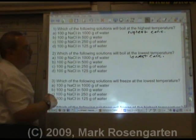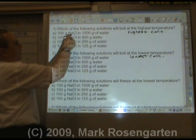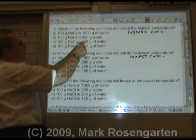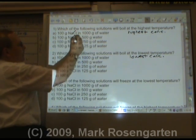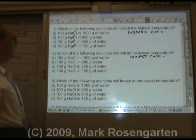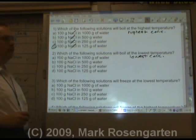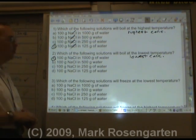Well, they are all exactly the same substance so we can eliminate that. Concentration is the amount of salt you have in how much water you are dissolving it in. 100 divided by 1000, 100 divided by 500, 100 divided by 250, 100 divided by 125. That's going to be your most concentrated solution. This is going to be your lowest concentration solution.